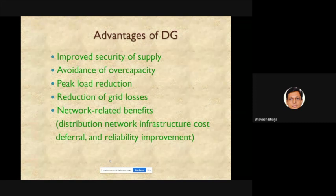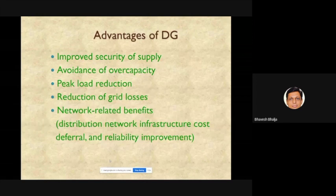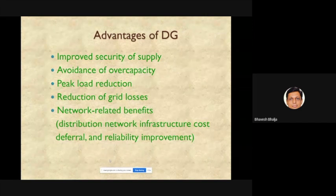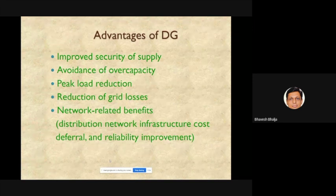Other utility benefits from DG include reduction in grid losses (reducing AT&C losses) and various network-related benefits that distribution utilities will gain.